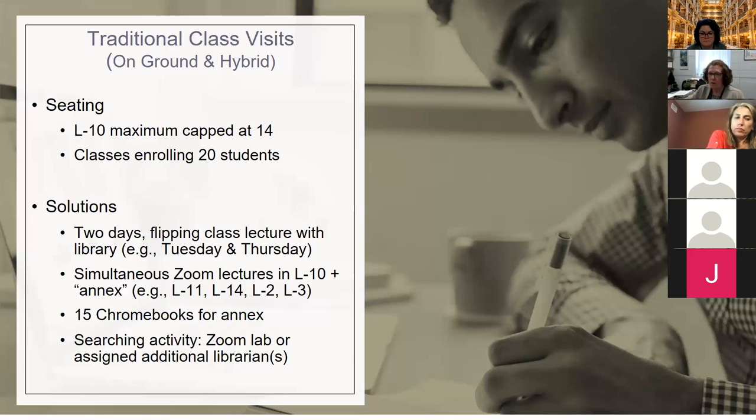If your class has over 14 students, however, they can't all search, and a big part of these classes is to practice using the databases. So I purchased 15 Chromebooks, 15 for each library, because we have the same problem in Brooklyn. What will happen is that, depending on the size of the class, someone will teach—let's say it's me—I will teach the class in L10 and zoom it to the screen in L11 where the students will have the Chromebooks.